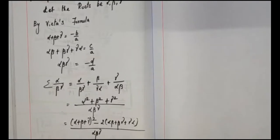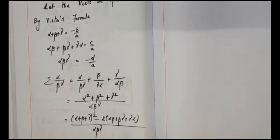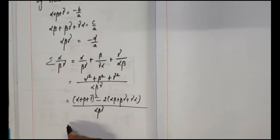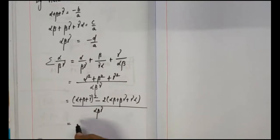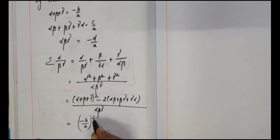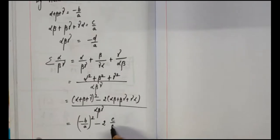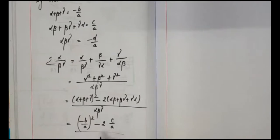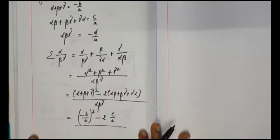You know every value, so substitute. Alpha plus beta plus gamma is minus b by a, the whole squared, minus two, and this term is c by a. The whole thing divided by minus d by a.